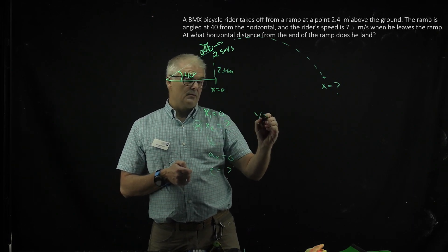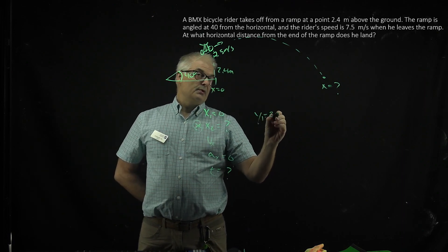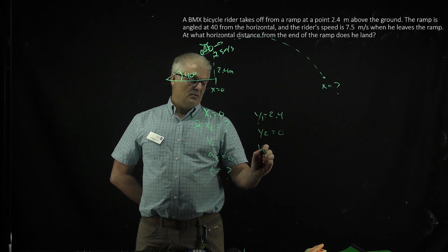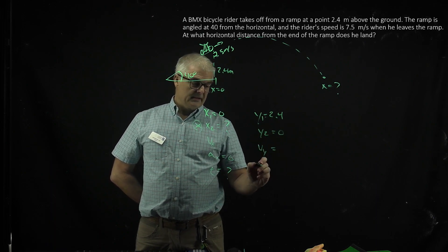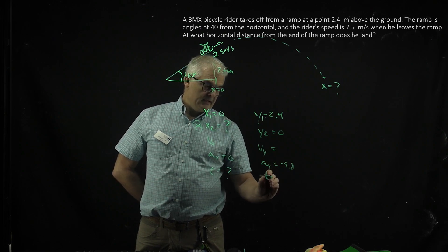y equals, y1 equals 2.4 meters, right? y2 equals 0 meters, vy is a number. We're going to plug that in. Ay is negative 9.8, and t equals whatever.